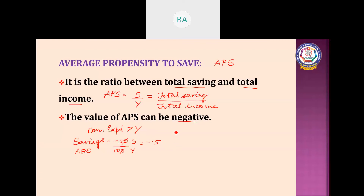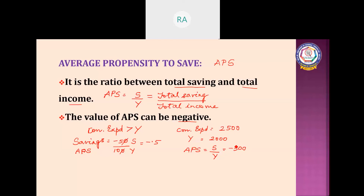Here is one more example: if consumption expenditure is 2,500 and income is 2,000, there is negative saving of minus 500. APS equals S by Y, so minus 500 divided by 2,000 equals minus 1 by 4, which is minus 0.25. This is how you calculate APS.